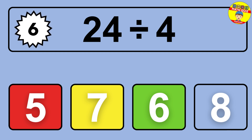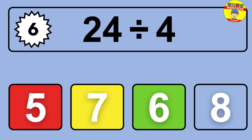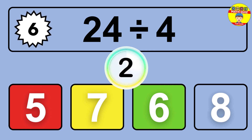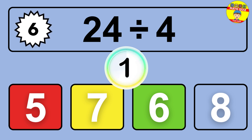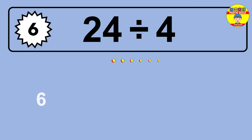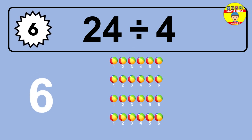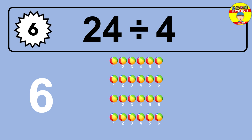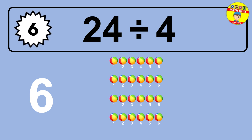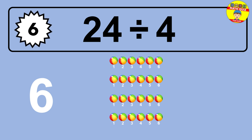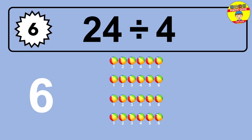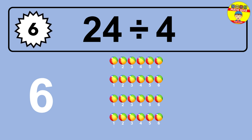24 divided by 4 is... time to think. Let's go to the solution. Divide the number 24 by 4. Each group contains 4 units, so dividing 24 by 4 results in 6 equal groups. Thus, the result is 24 divided by 4 equals 6.